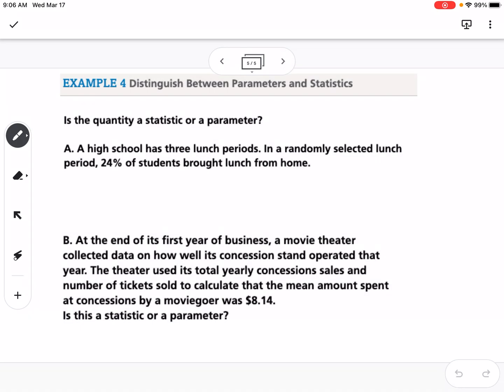Our last example is distinguishing between parameters and statistics. We're determining is the quantity a statistic or parameter. Part A says a high school has three lunch periods. In a randomly selected lunch period, 24% of students brought lunch from home. The 24% describes a sample of the population. The sample was the students in the selected lunch period. The population was the whole school, and so 24% would be a statistic because it's representing that amount of our sample.